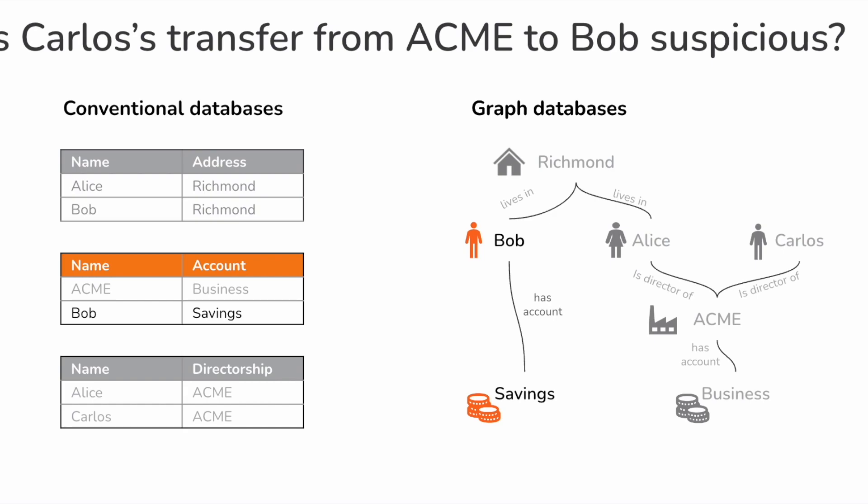The question is: if Carlos, as a director of Acme, transfers money from his business account to Bob's savings account, is that a related party transaction? Well, it's kind of clear from the picture that it is, and a graph database would be able to show this very easily.